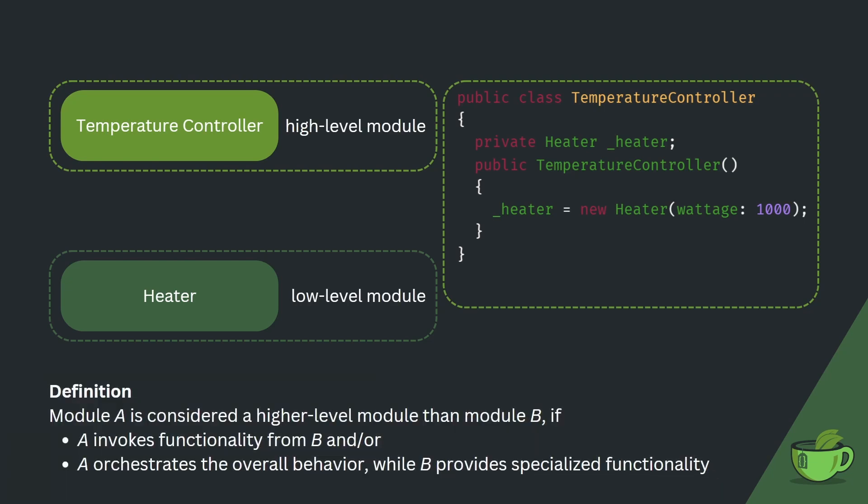A possible definition I'd like to bring in here is that module A is considered a higher-level module than module B if A invokes functionality from B, and/or A orchestrates the overall behavior while B provides specialized functionality. With this definition in mind, we can see that high- and low-level module is a term relative to the current part of the system we are looking at.